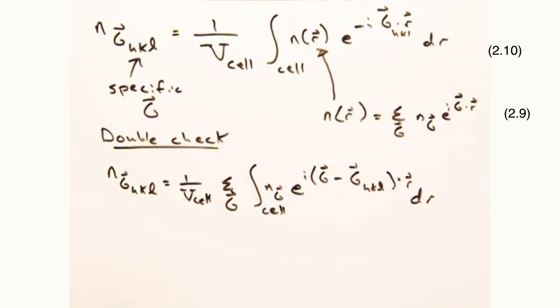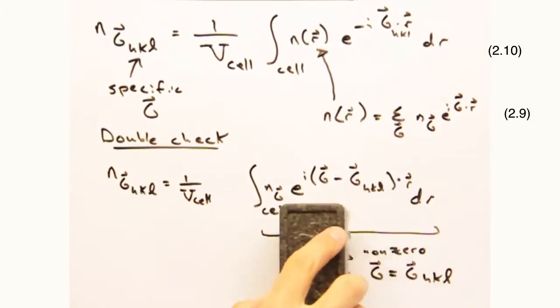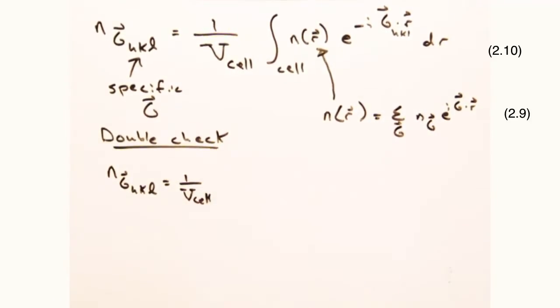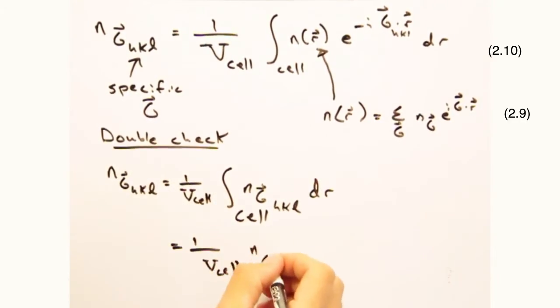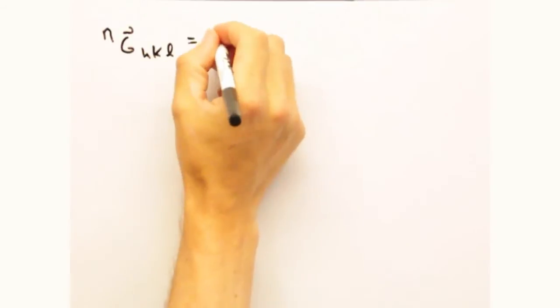When integrated over the entire unit cell, there's only one nonzero solution, and that is at g equals g of the same hkl as the coefficient. We also saw this in the delta k equals g constructive interference condition from lecture. Now after some plug and chug, we can see that we can get n sub g sub hkl equals n sub g sub hkl. So mathematically, we're on the right track.